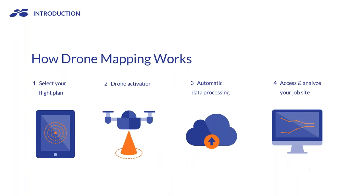The general drone mapping process can look a little different depending on your exact needs, but usually you'll select your flight plan on a tablet showing the area you want mapped. Your drone will automatically take off, fly the area in a lawnmower pattern capturing all the data, come back, and land itself. The data is automatically processed in the cloud, at which point you're able to access and analyze your job site data.